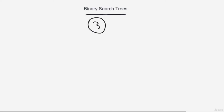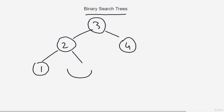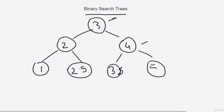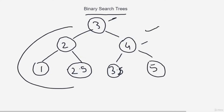Hey guys, welcome back. Let's learn about binary search trees. A binary search tree is a binary tree where for any given node n, all nodes in its left subtree have values less than n, and all nodes in its right subtree have values greater than n. This is true for every node. For example, if the root is 3, only lesser values (like 2.5) are on the left and only greater values are on the right.